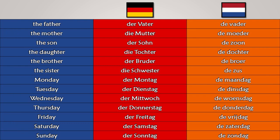Family members: Der Vater! De vader! Die Mutter! De moeder! Der Sohn! De zoon! Die Tochter! De dochter! Der Bruder! De broer! Die Schwester! De zus! Days of the week: Der Montag! De maandag! Der Dienstag! De dinsdag! Der Mittwoch! De woensdag! Der Donnerstag! De donderdag! Der Freitag! De vrijdag! Der Samstag! De zaterdag! Der Sonntag! De zondag!